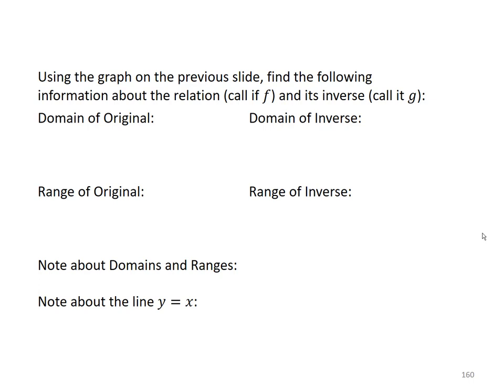Using the graph on the previous slide, find the following information about the relation. I'm going to call it f, and its inverse, we'll call that g. So the domain of the original function was negative 2, negative 1, 0, 1, and 2. And that is a set containing those values.